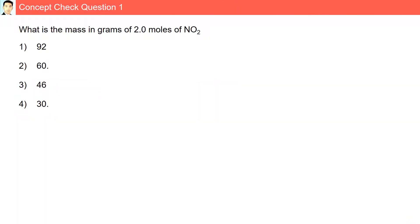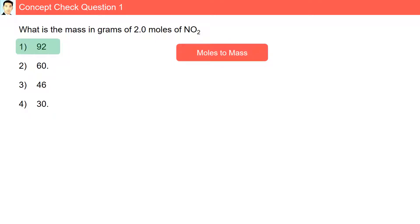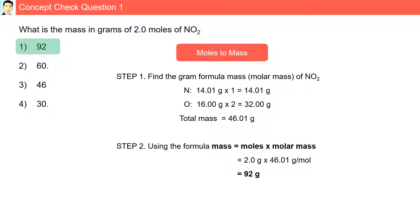Concept check question 1: what is the mass in grams of 2 moles of NO2? The answer is 92 grams. The first step was to find the gram formula mass of NO2, which is 46.01 grams per mole. Then using the formula — mass equals moles multiplied by molar mass — we multiply 46.01 by 2, giving 92 grams.